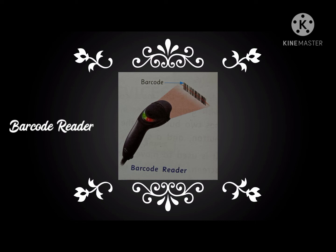Next is the barcode reader. When you go to a market, you can see barcode readers in the billing section. A barcode is a pattern of parallel lines of varying thickness that store coded information. Barcodes can be seen on many products such as books, packed food items, and anything you buy from a supermarket. To read that stored information, we use barcode readers.